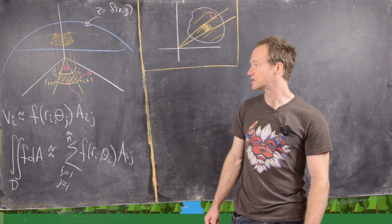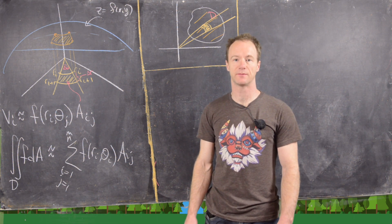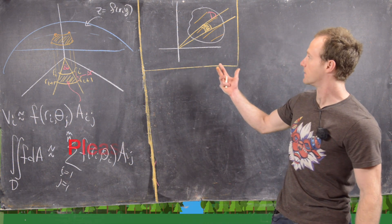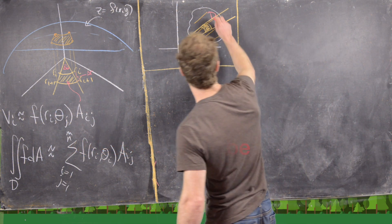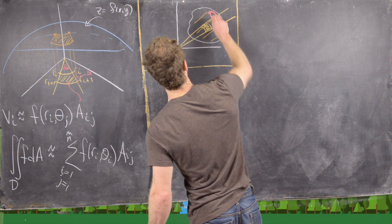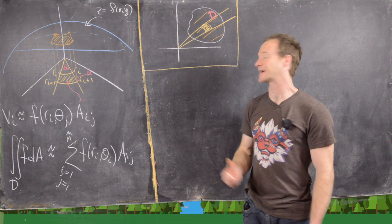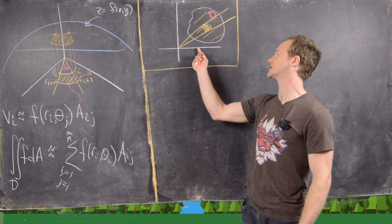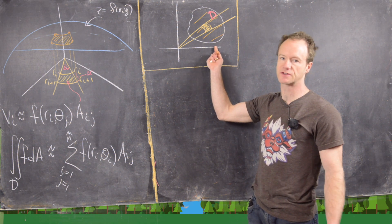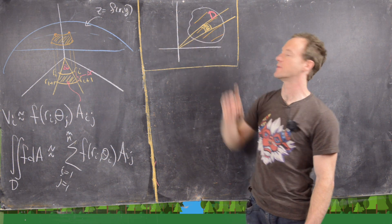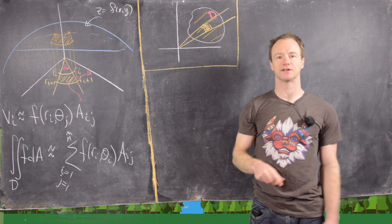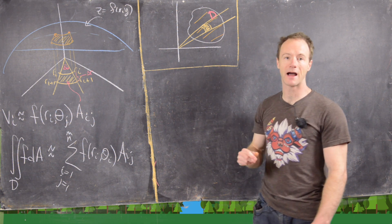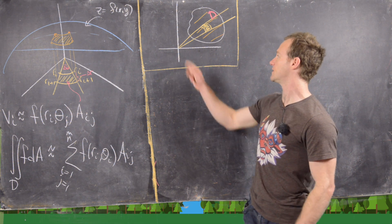Here we're going to look at double integrals over regions in the plane that can be described via polar coordinates. So say we've got this region in the plane which I'm calling D. In the past, we split D up via rectangular coordinates — between x values and y values — giving us little rectangles. But some regions are not very good for that, like circles, so we might want to split it up with polar coordinates.